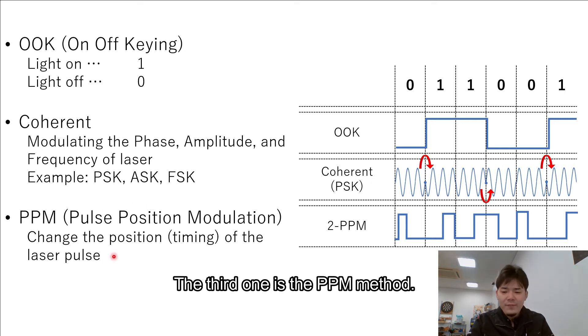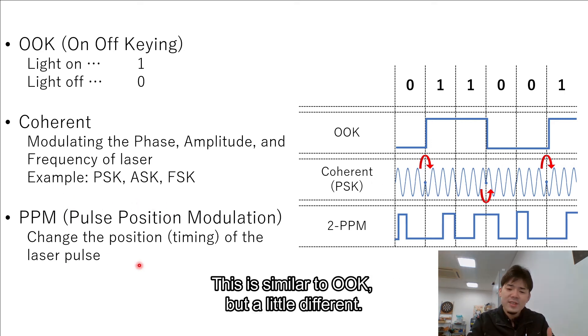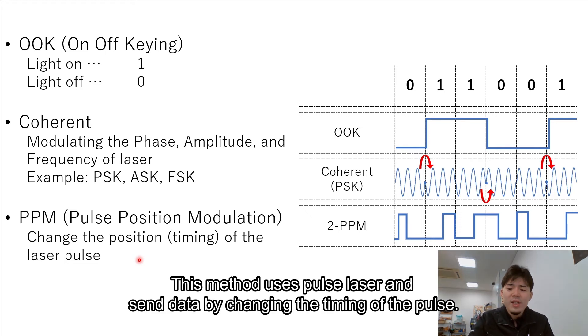The third one is PPM method. This is similar to On-Off Keying, but a little different. This method uses pulse laser and sends data by changing the timing of the pulse.